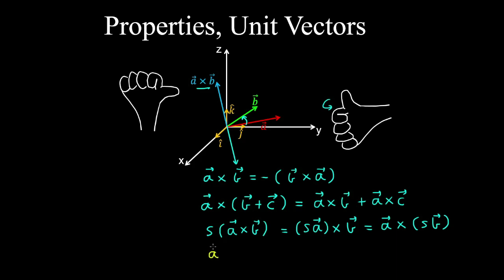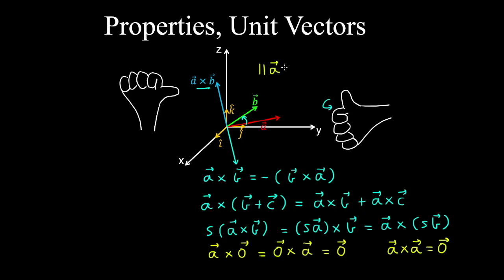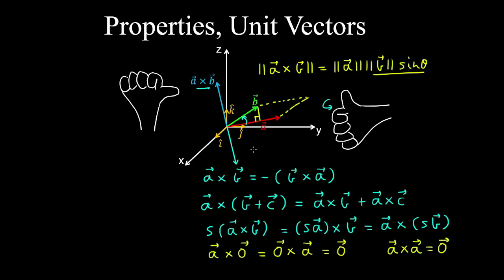Intuitively, the cross product between a and a zero vector equals the cross product between a zero vector and a, which is the zero vector. Similarly, the cross product between a vector and itself is also the zero vector, since the parallelogram formed between a vector and itself has an area of zero.